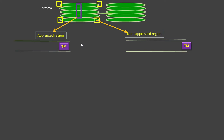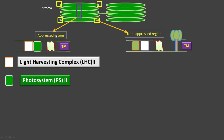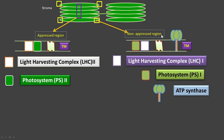In the thylakoid membrane, in the appressed region, we find light harvesting complex LHC2 and Photosystem 2. Similarly, in the non-appressed region we have light harvesting complex 1 and Photosystem 1, and ATP synthase — this lollipop structure — is known as ATP synthase, which is involved in the synthesis of ATP molecules.